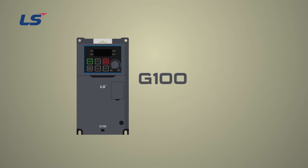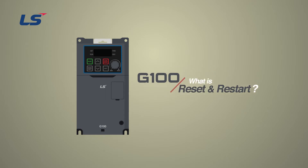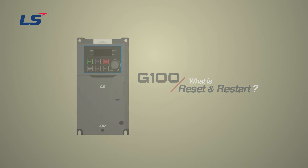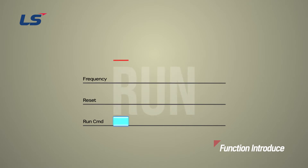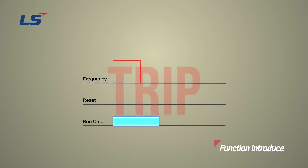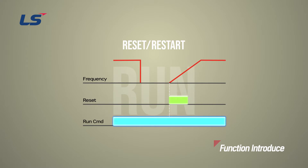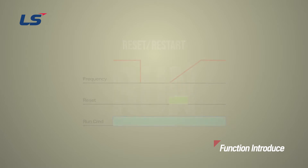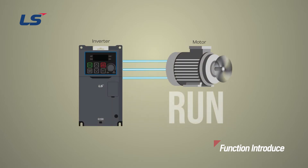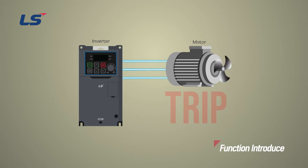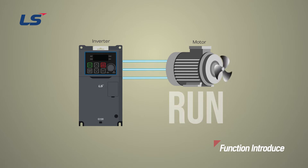In this video, we will learn about the Reset-Restart function of the G100. The Reset-Restart function automatically resets the trip and restarts if the Terminal Block Operation command is on after a trip condition. This function can be used when you want to automatically reset an intermittent trip and restart it.